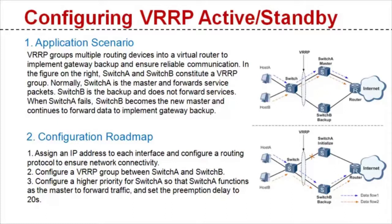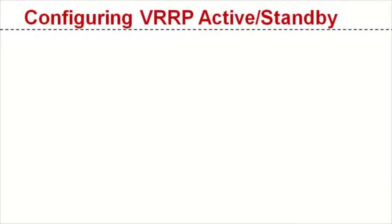Let's move on to the configuration roadmap. First, assign an IP address to each interface and configure a routing protocol to ensure network connectivity. Second, configure a VRRP group between switch A and switch B. Third, configure a higher priority for switch A so that switch A functions as the master to forward traffic. And set the preemption delay to 20 seconds.